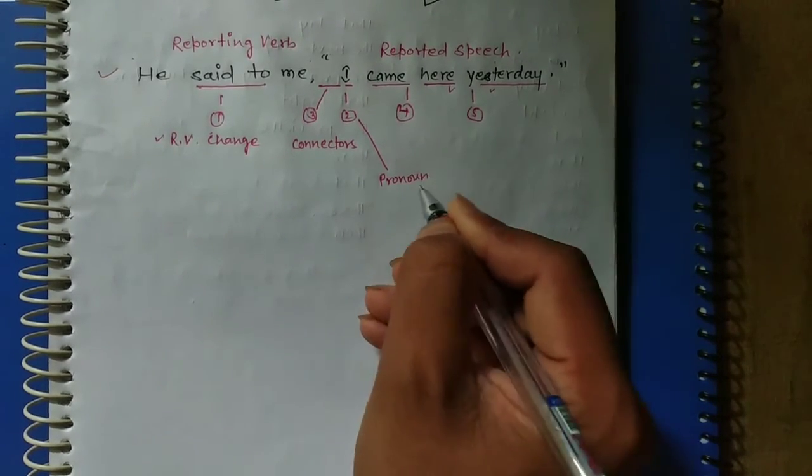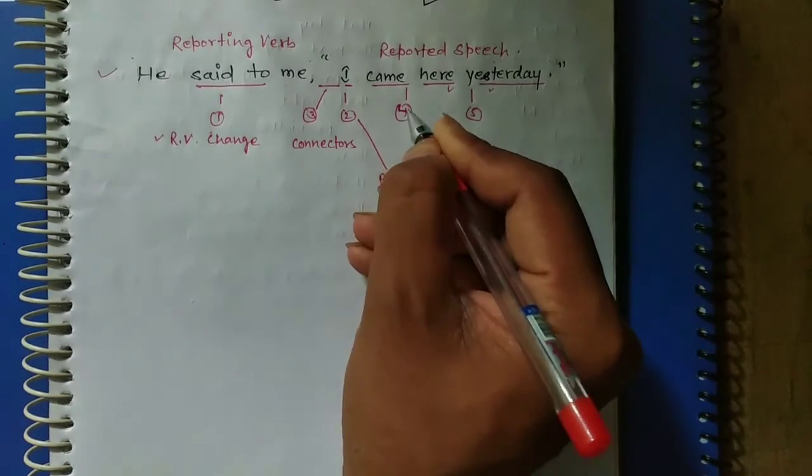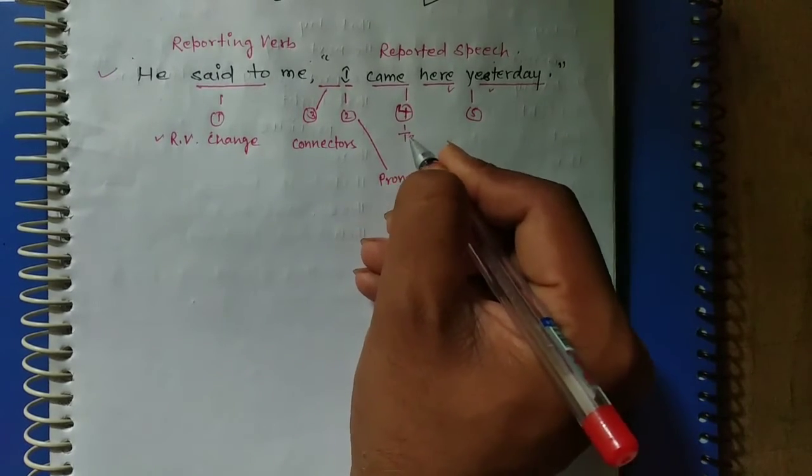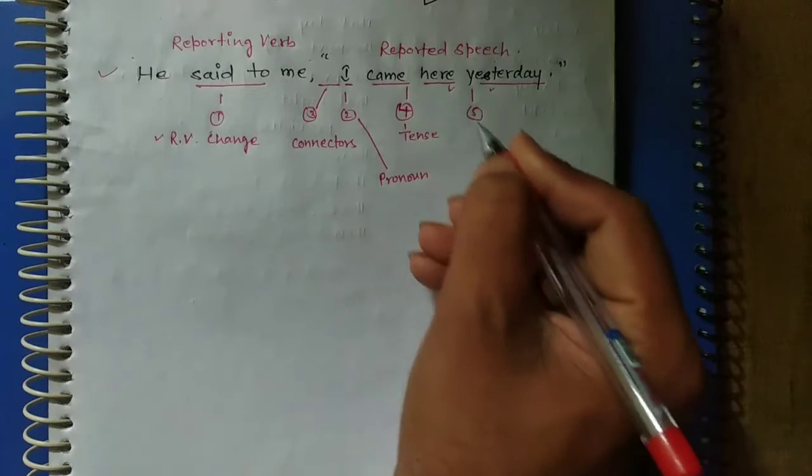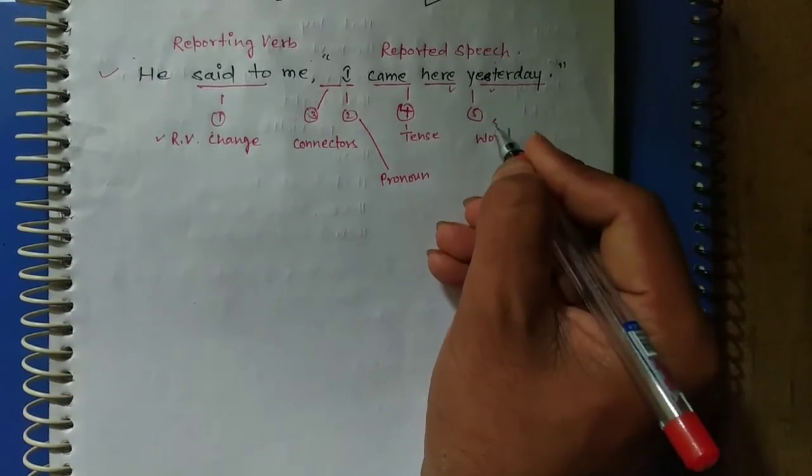Next, the verb will be changed in tense, and the last one will be in some specific words we will change, so you can say special words. And how do we change these all things?